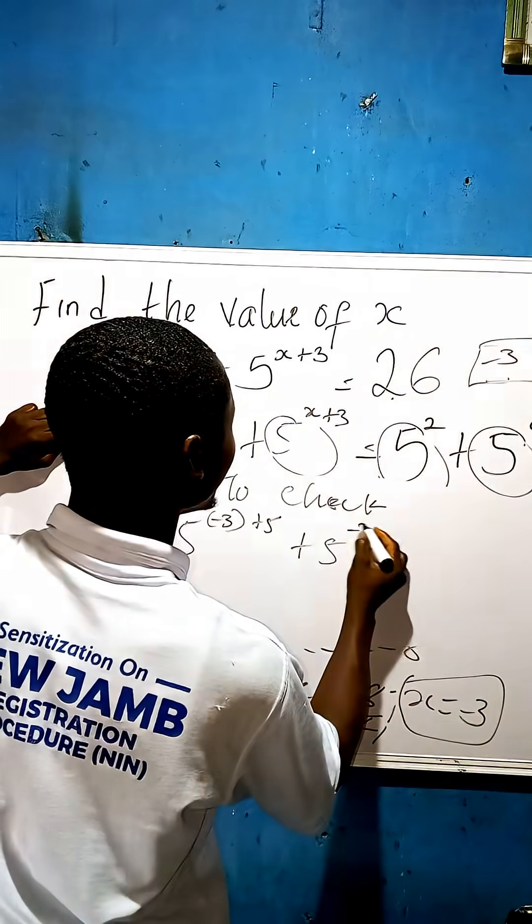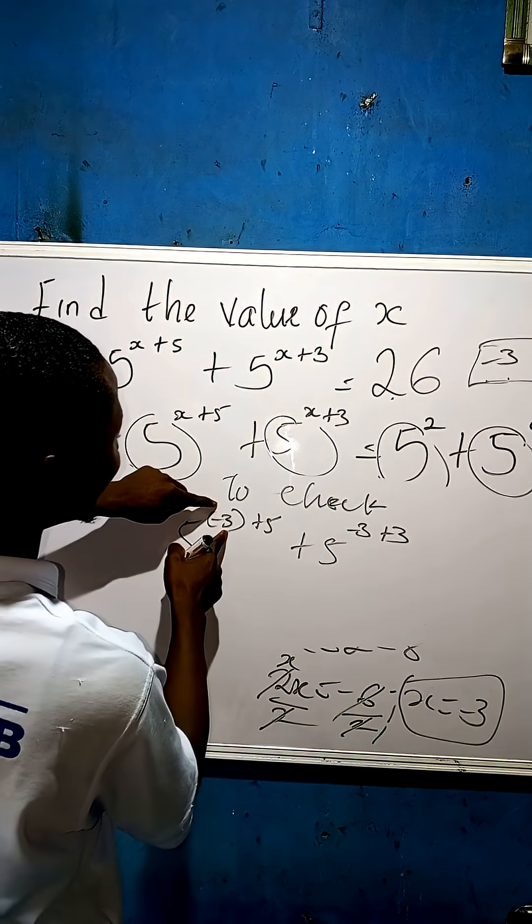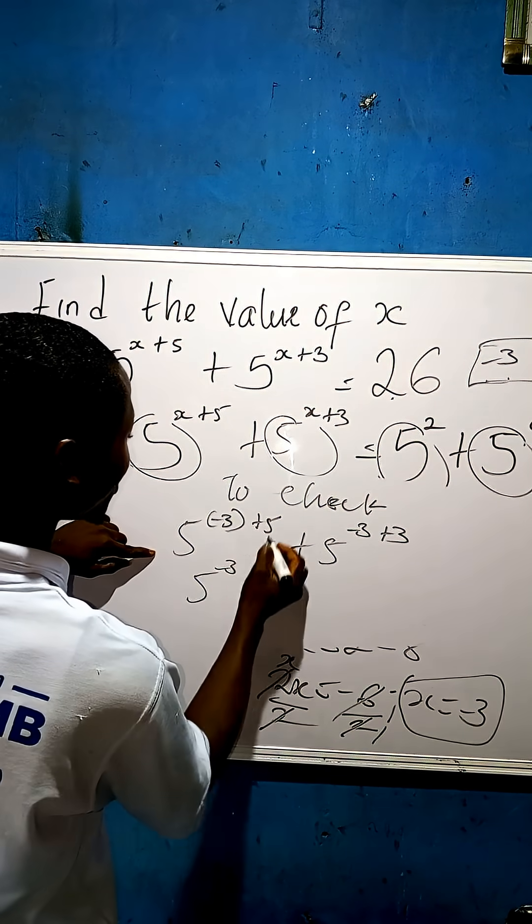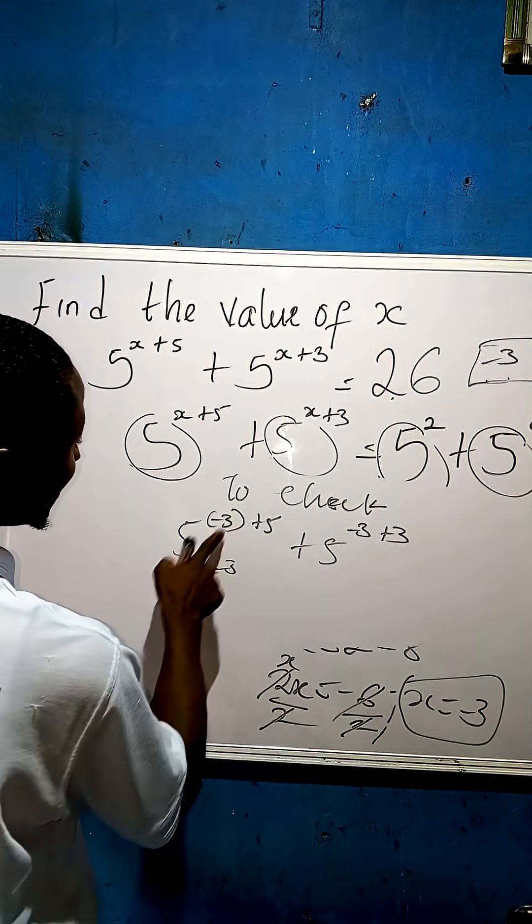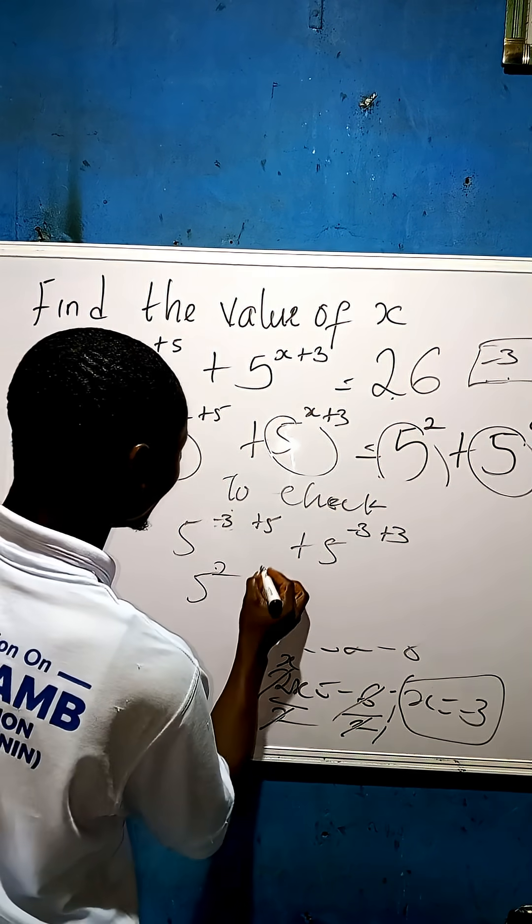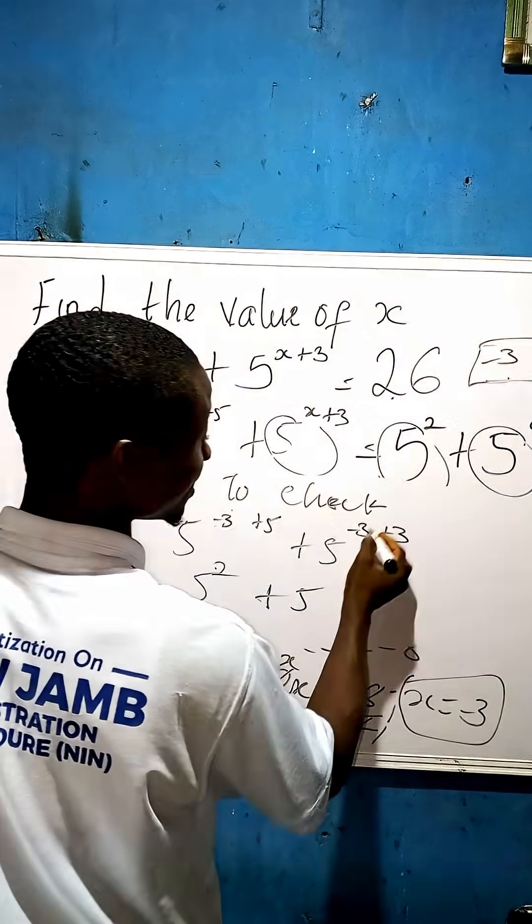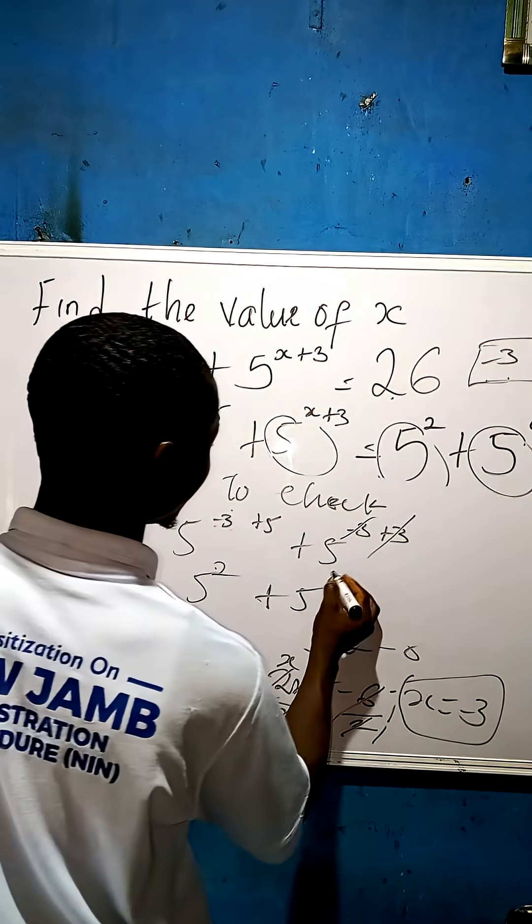5 to the power of minus 3 plus 5. Let's move this bracket: minus 3 plus 5 gives us 2, right? Plus 5 to the power of minus 3 plus 3, this one is 0, right?